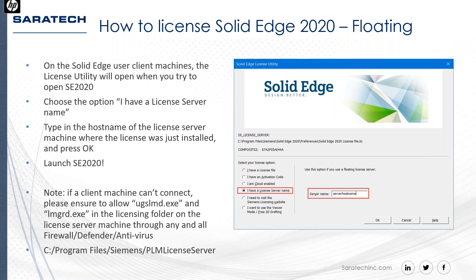If you have an issue at this point and the license server host name does not successfully pull a license, the most likely cause is a firewall issue. Go back to the license server and allow the UGS LMD and LMGRD executables through your firewall. Both files are located at: C:\Program Files\Siemens\PLM License Server. Make sure both are allowed through Windows Firewall or Windows Defender, and any other antivirus that may be blocking them.